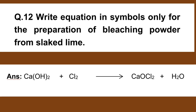Number 12. Write equation in words and symbols only for the preparation of bleaching powder from slaked lime. Ca(OH)2 plus Cl2 gives CaOCl2 (bleaching powder) plus H2O.